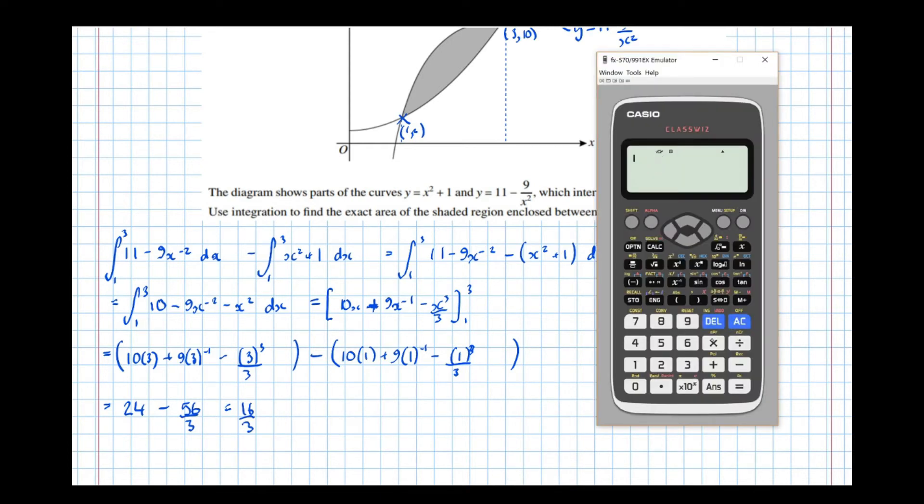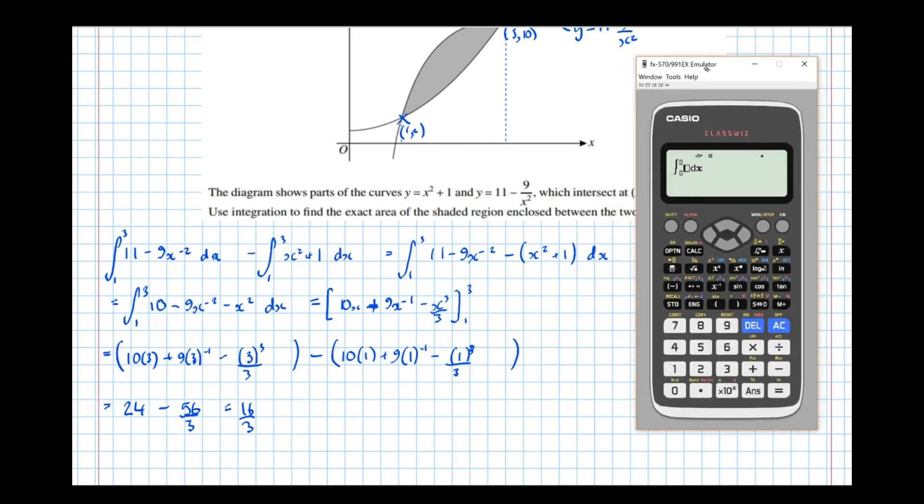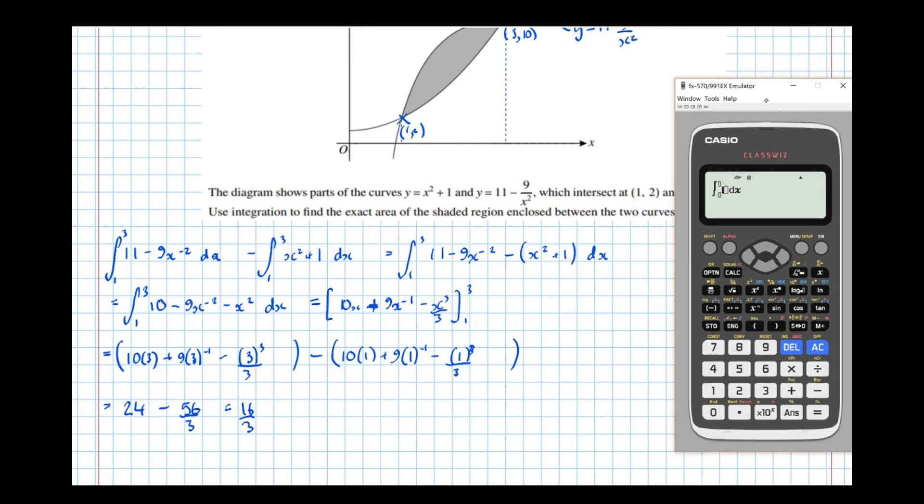Now, what we can do to check that answer, is check it using the integration button on the calculator. Now, I'm assuming that an in-detail question like this wouldn't be asked, you wouldn't be asked to do this without showing full working. So I would expect the question to say, show full working. But if it doesn't, it's fair game just to use the calculator. So, we're going to do the integral of 11 minus 9 over x squared.